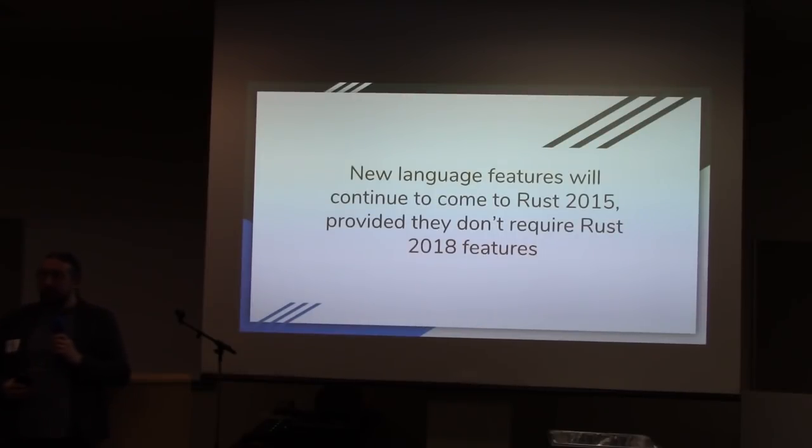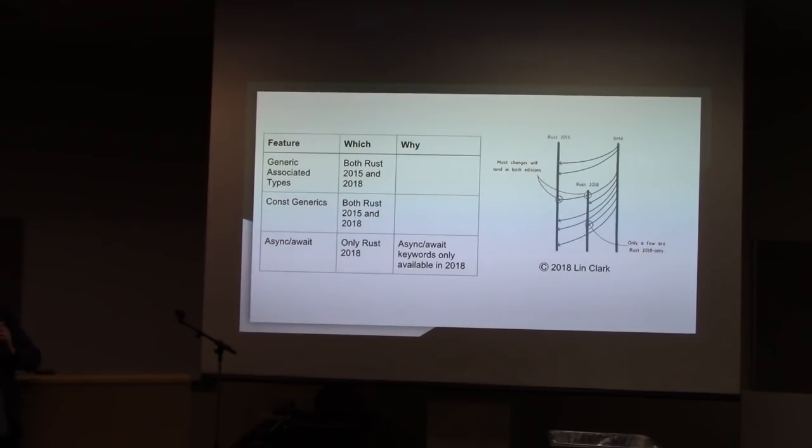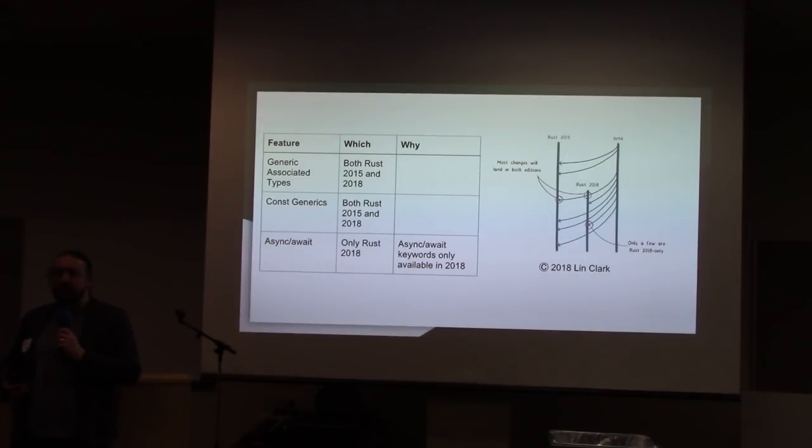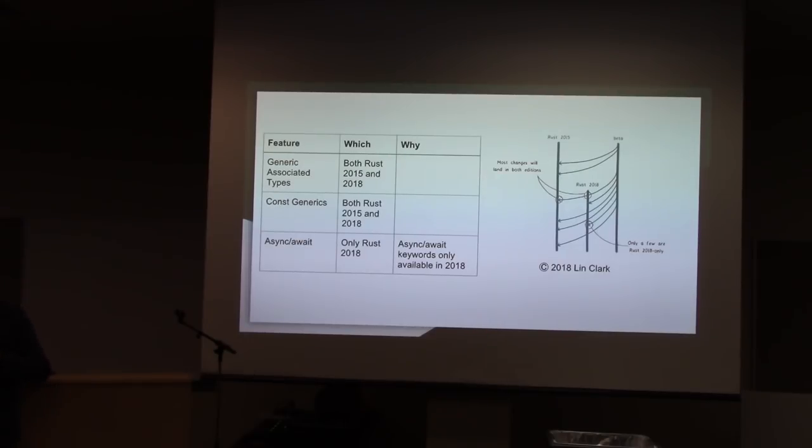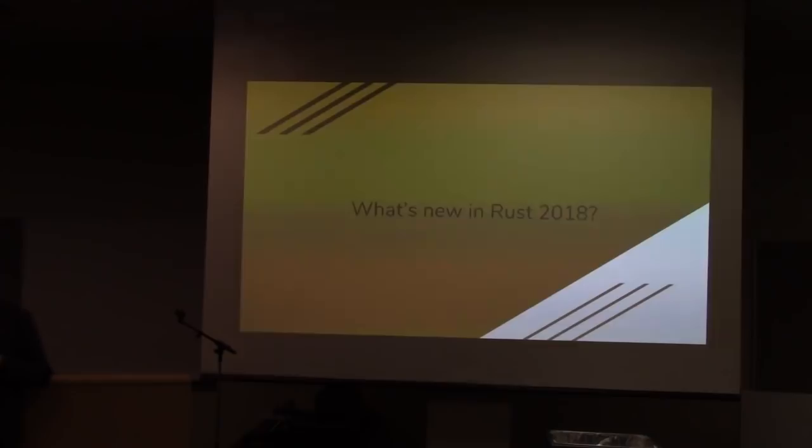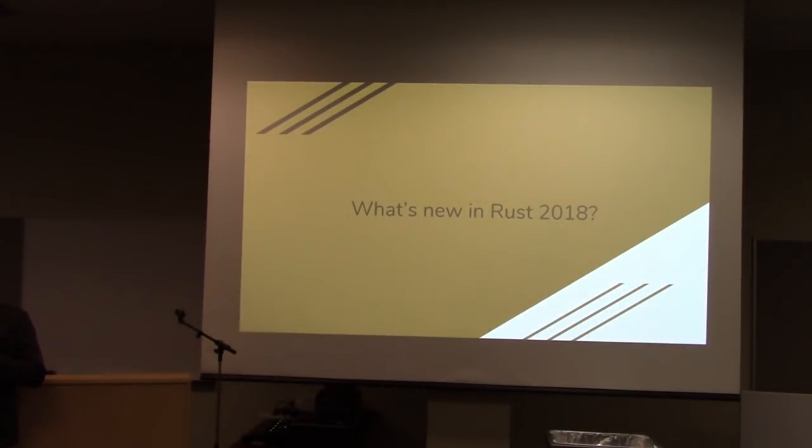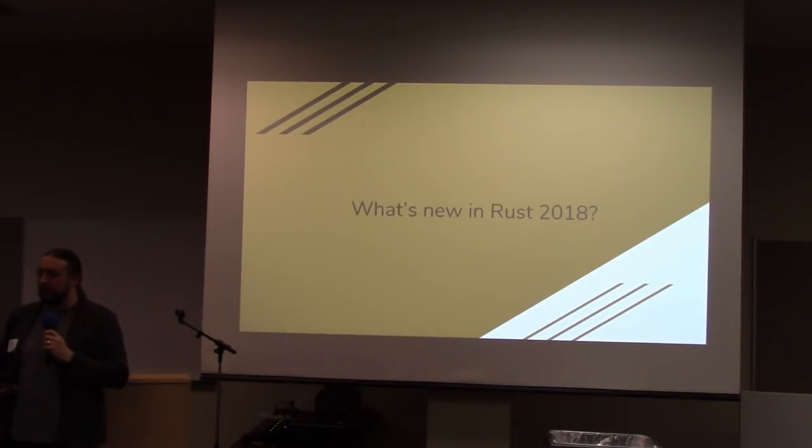What's more, new features will get added to Rust 2015 as well, assuming they don't require changes that were Rust 2018 only. For instance, if you want const generics? Great! As far as I know, they'll be coming to Rust 2015 whenever they come. If you want async await, the keywords are only available in Rust 2018 because that would have been a breaking change. You can still use crates that use async and await, you just can't use them in your own code if you're running Rust 2015.